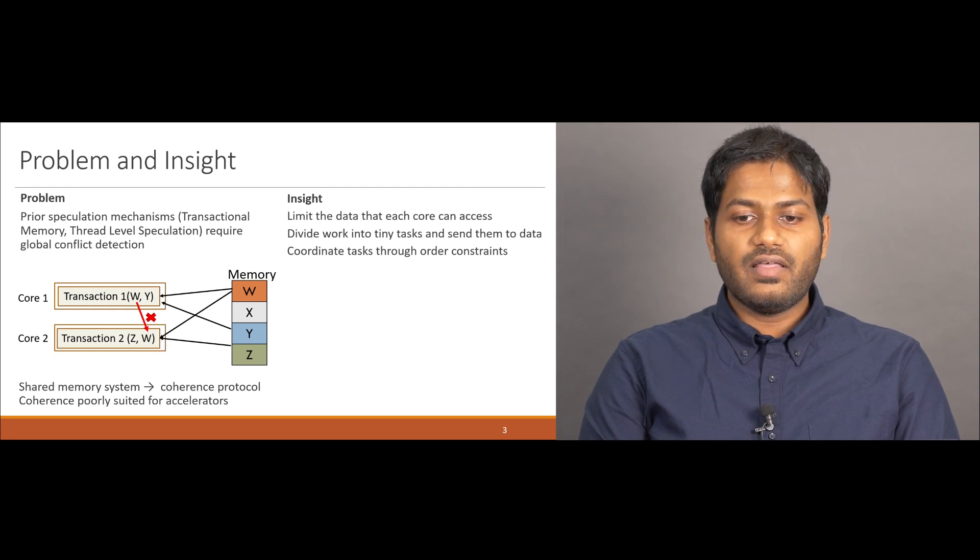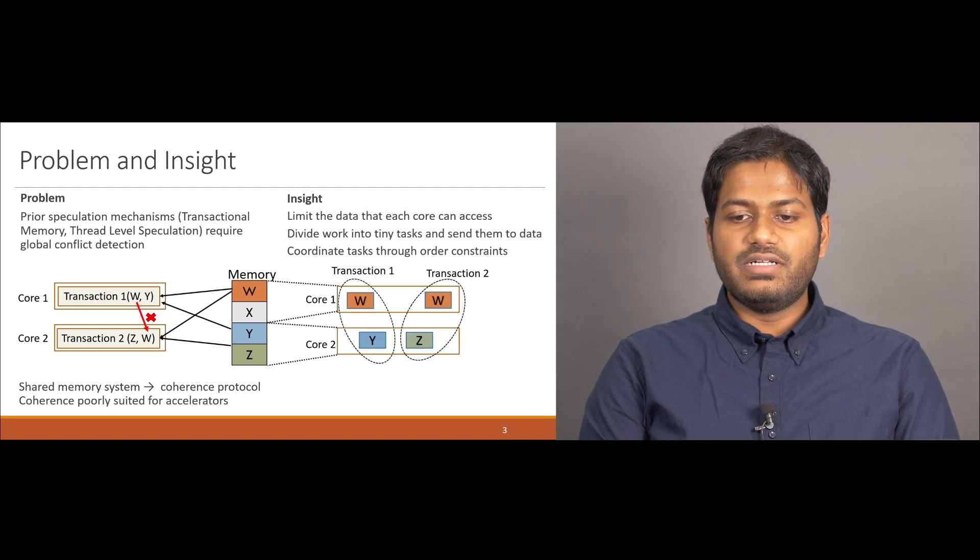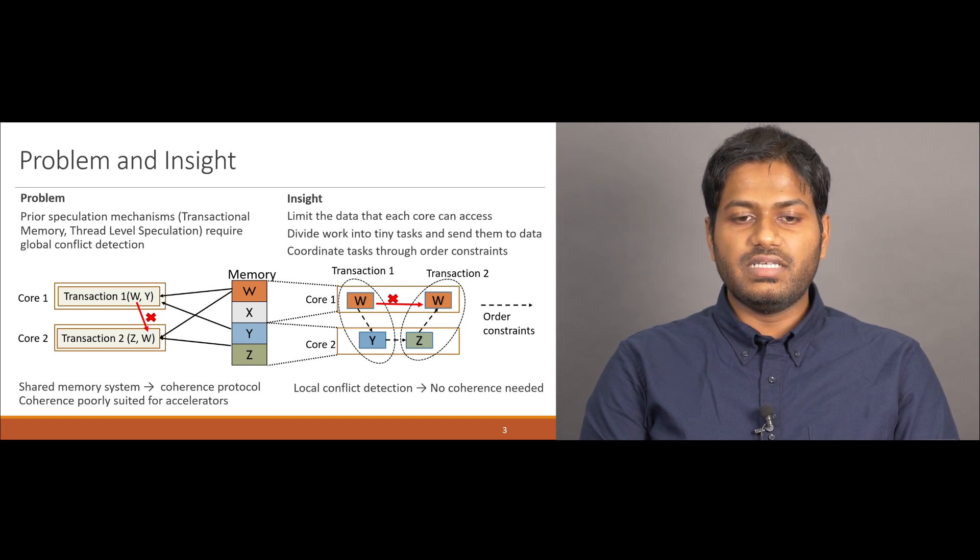We limit the data that each core can access and divide each transaction into tiny tasks, which are then sent near to the data they operate on. To maintain the atomicity of the original transactions, these tiny tasks are sequenced through order constraints. Under this scheme, all conflicts become local and no coherence is needed.